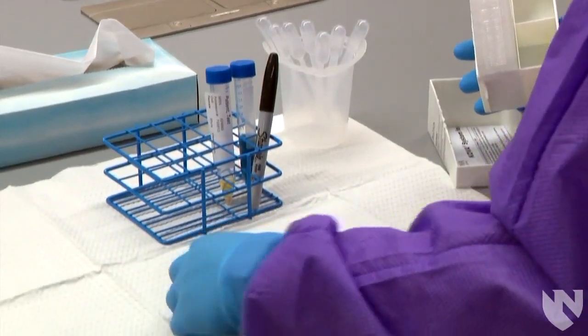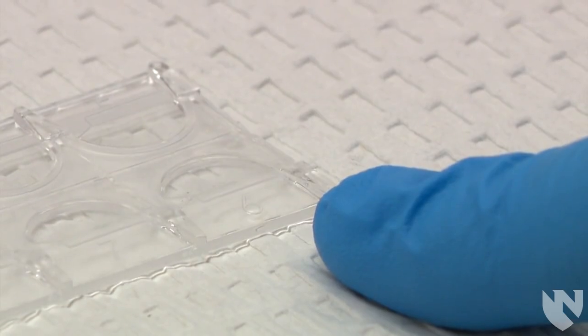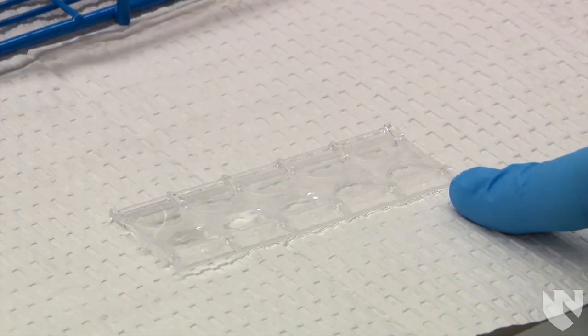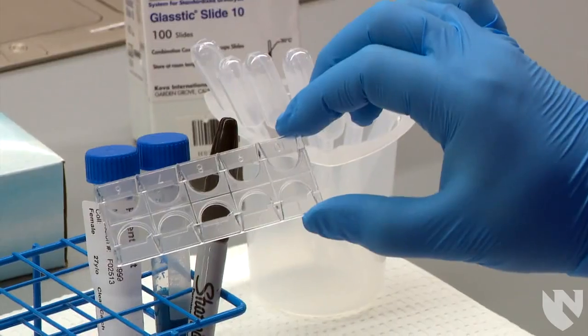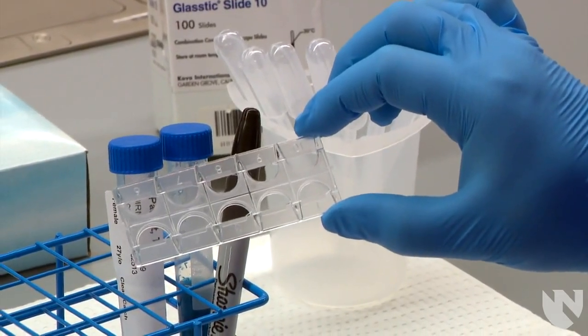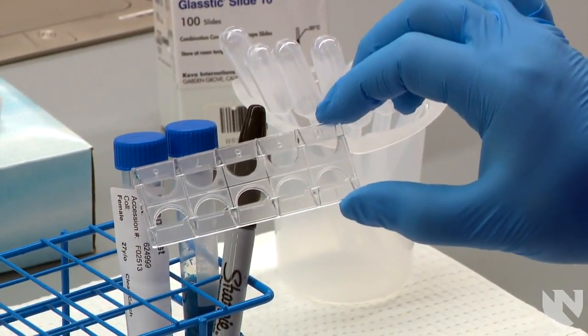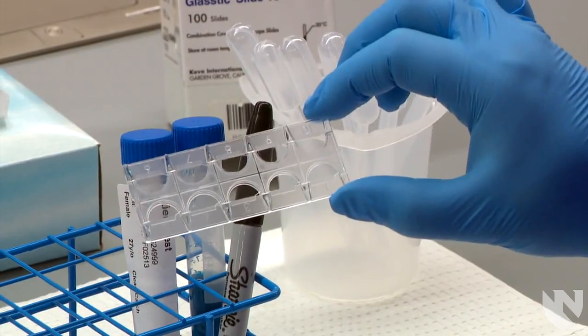Place your Cova slide on the white mat and decide which well you are going to load. The wells are numbered from 1 to 10. Some people also hold the Cova slide upright in their hand if they have trouble loading the sample when the slide is on the bench.